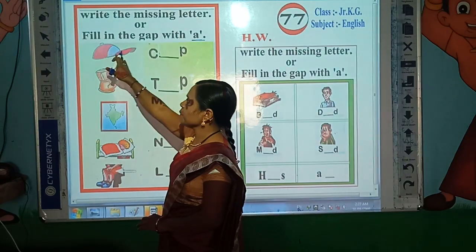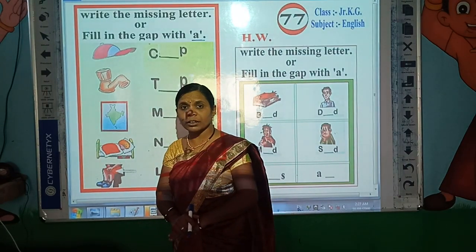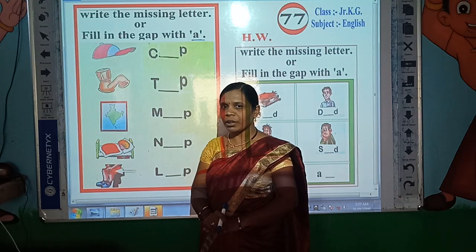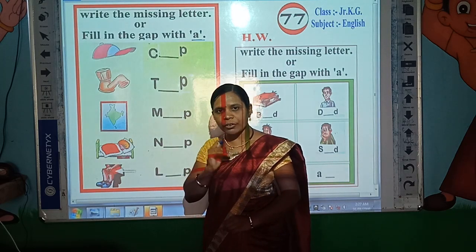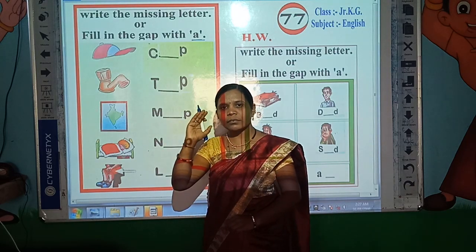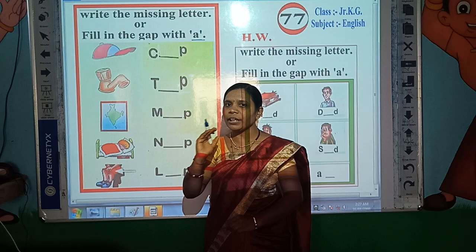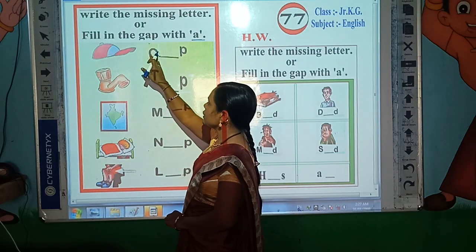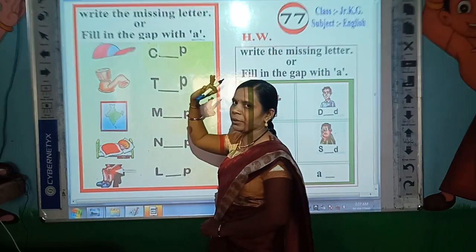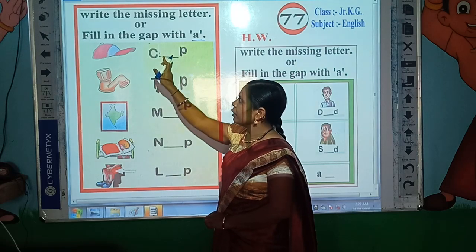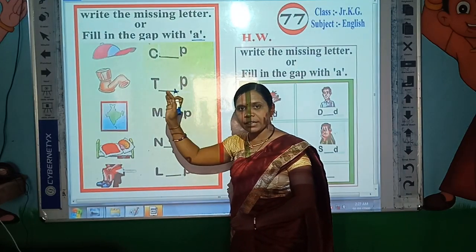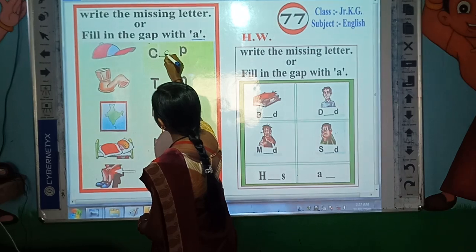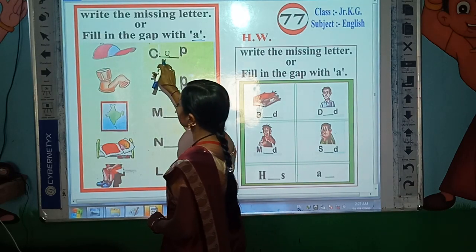Now look here — which picture is this? Correct. This is the picture of cap. Now look at the spelling of cap: C-A-P, cap. Now look here: C-P. Here, A is the missing letter, so write A here.